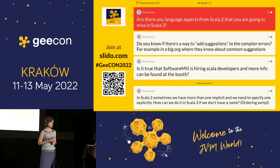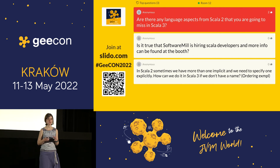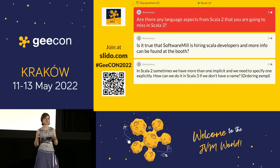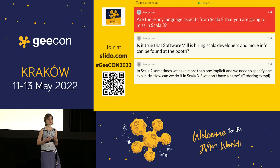Question: Are there any language aspects from Scala 2 that you're going to miss in Scala 3? In my opinion, no. The way I see Scala 3 is that it does drop some features, but none of those that I have used extensively or think are very useful. What Scala 3 does for me is just make programming simpler, and that's very important to me.